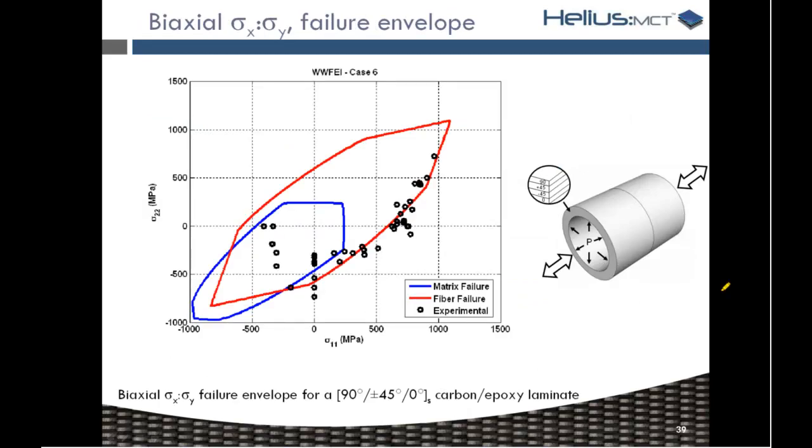So, and in fact, Bart referred to the WWFE examples previously, and this is exactly one of those coupons. You can imagine on the right-hand side there, one of these coupons is pipe-like if you will, where we apply tension or compression on the ends of the pipe and internal pressure.